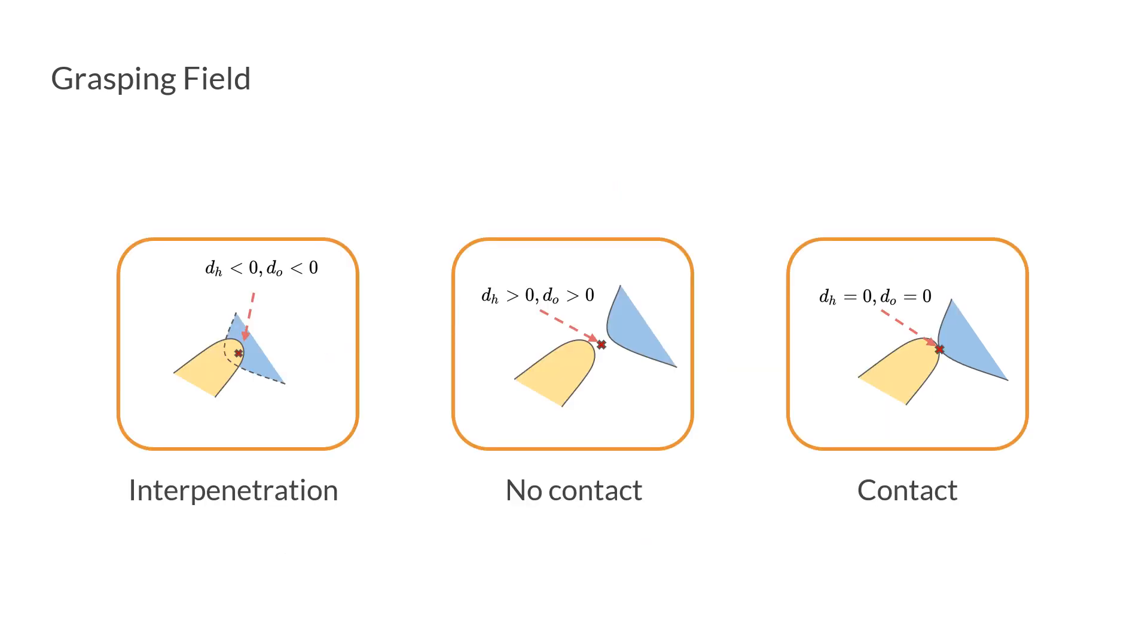In contrast to mesh-based representation, with grasping field, the definition of contact can be learned directly from data. It also allows us to encourage contact and to avoid interpenetration, based on the predicted sign distance.